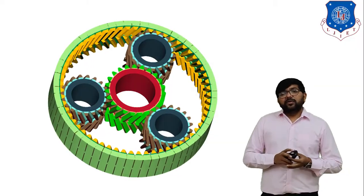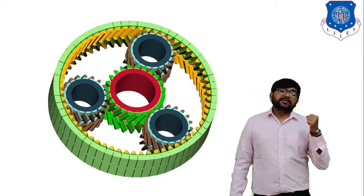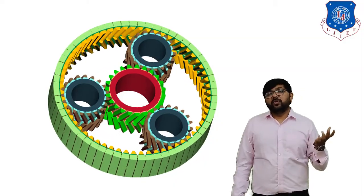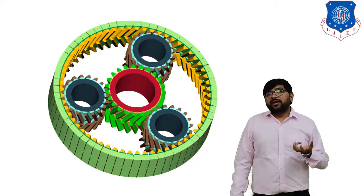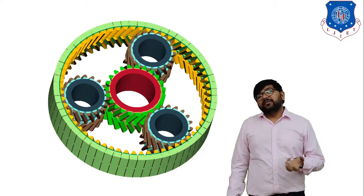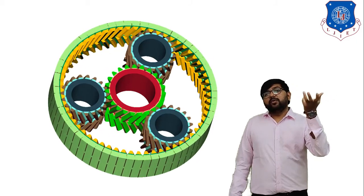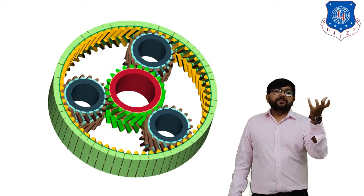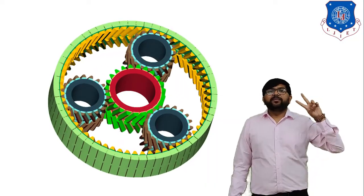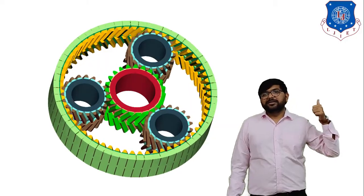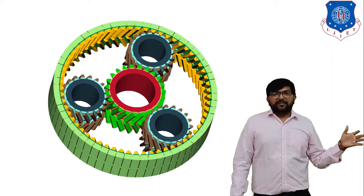As mechanical engineers, you all know what is orthographic and what is isometrics from Engineering Graphics. In orthographic, if you have any 3D object, you have to draw the front view, top view, and side view of that object using two types of systems: the first angle system and the third angle system. That is something you already learned in Engineering Graphics.